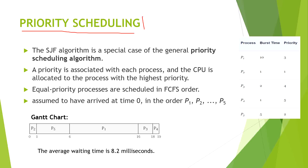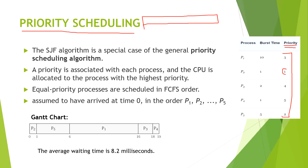We allocate the resource to the process with the greatest priority. As you can see, there is an extra column for priority alongside process and burst time. Don't take the misconception that the greatest number means greatest priority — here, one is the greatest priority, like rank in class, and five is the least.